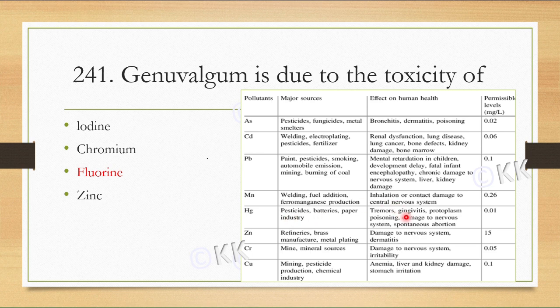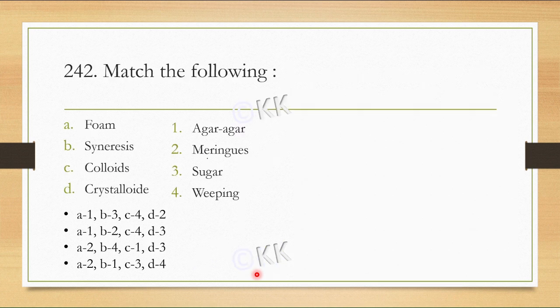Gingivitis and nervous system damage can be seen. Zinc poisoning causes nervous system damage and dermatitis. Chromium toxicity causes irritability. Copper toxicity has a lot of details. I have discussed the details, then I will add the discussion. Now let's look at our next question.